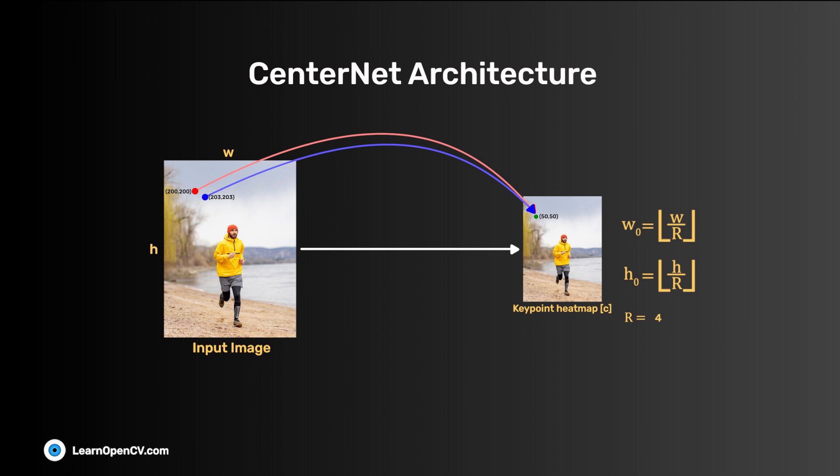To get the final predictions, we have to scale up the heatmap back to the original image dimension and map the values to the input image. But the scale-up operation may lead to precision errors up to R-1 pixels. In this case, errors up to 3 pixels. Local offset prediction fixes this error. It has a depth of 2 to fix both the X and Y coordinate offset.